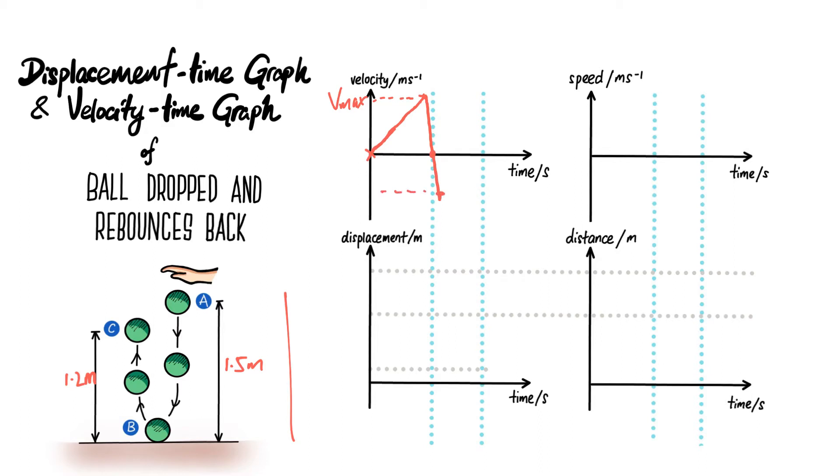Take note: the speed that it rebounds with is not the same magnitude as just before it hits the ground, because some of the energy will be converted to other forms like heat and sound. So this speed will be smaller, and then as it goes up, the speed is decreasing, so the velocity will get smaller and smaller until this point at point C where it reaches its maximum height. So this is B, and this is A here.